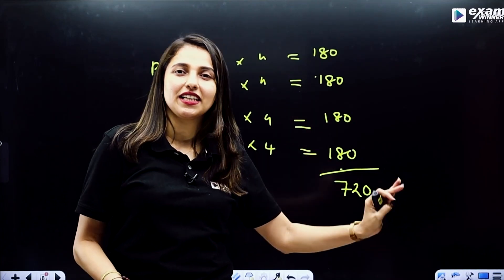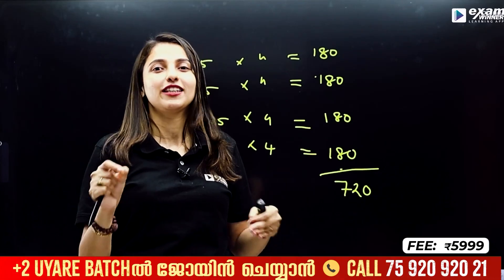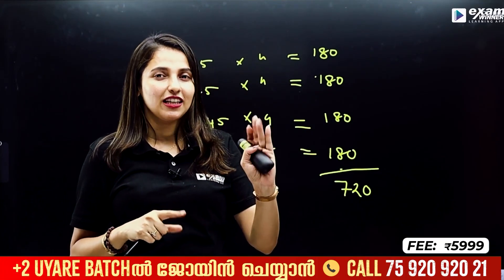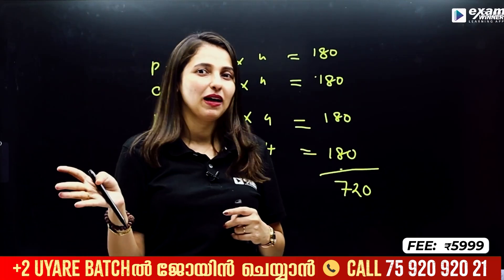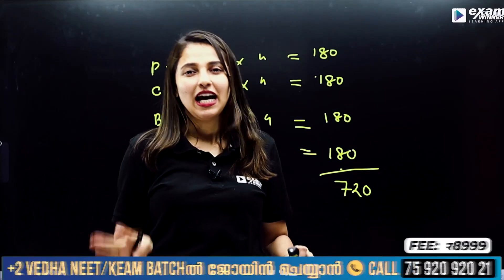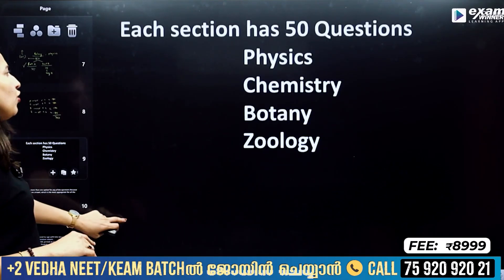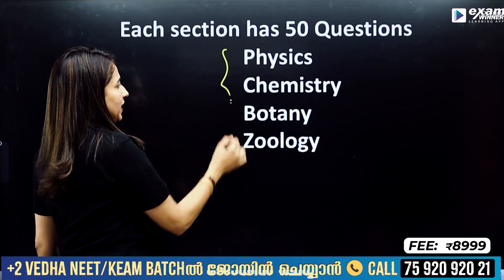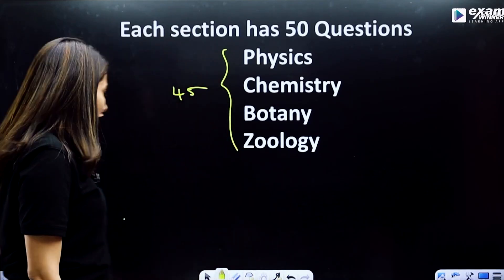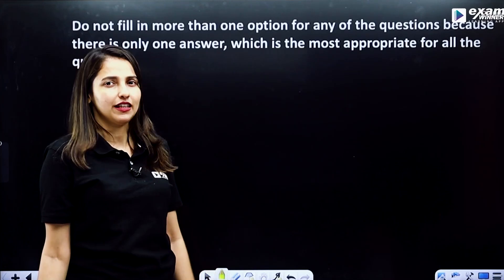If you have a correct answer, then that question will give 4 marks. That's why you have to mark the right answer carefully. You will get the four marks if all your answers are correct. If you have 10 questions in a subject, it will be asked for 45 questions because Part B will have options.